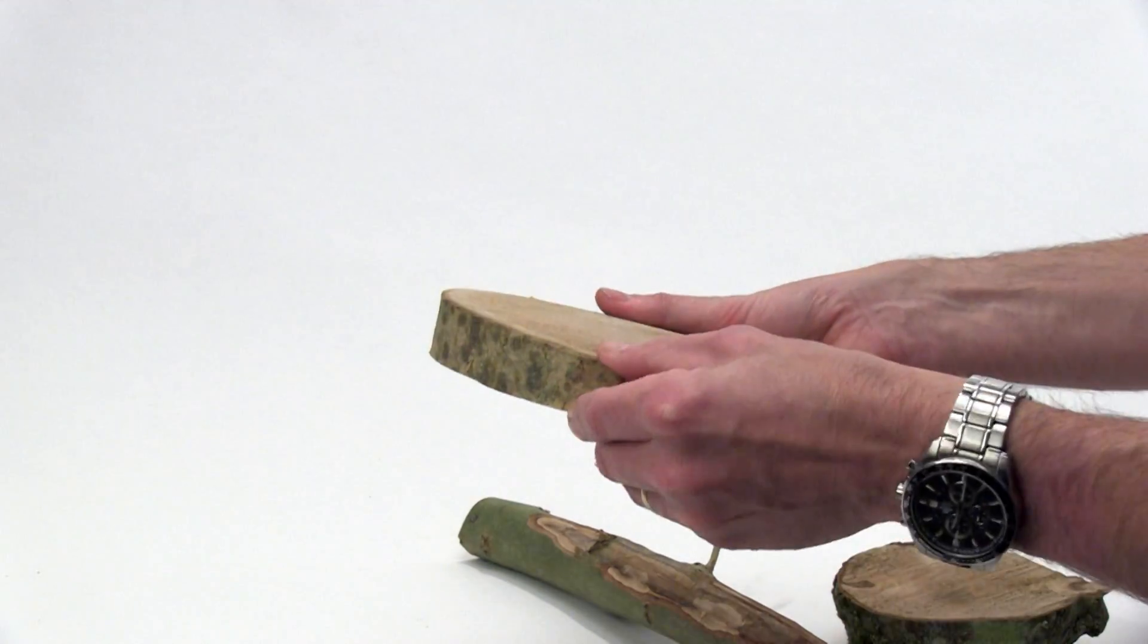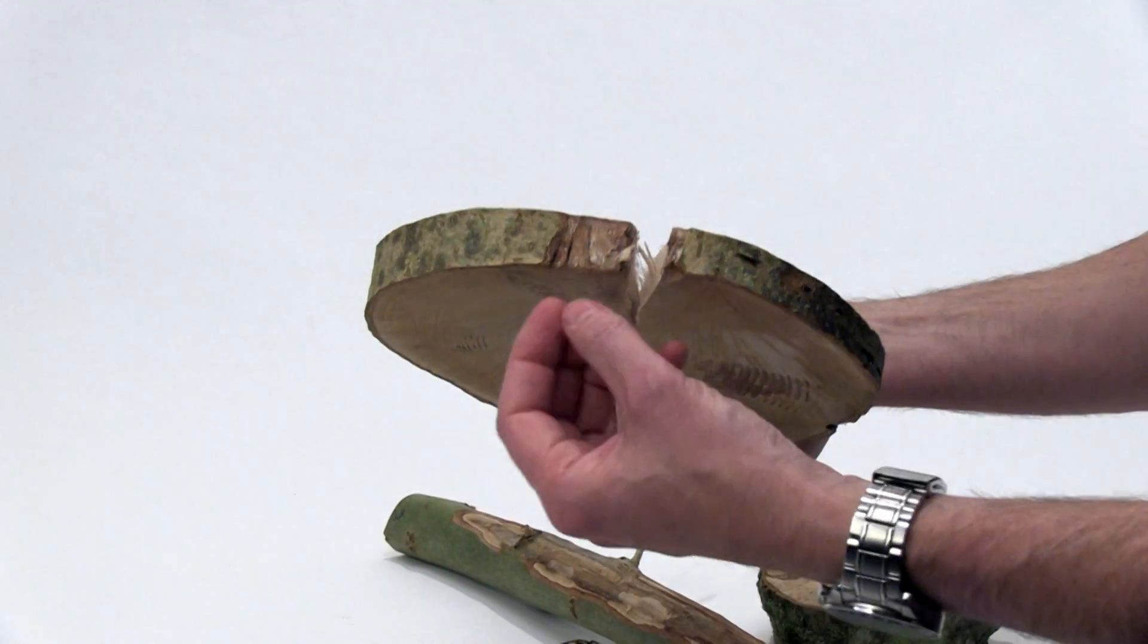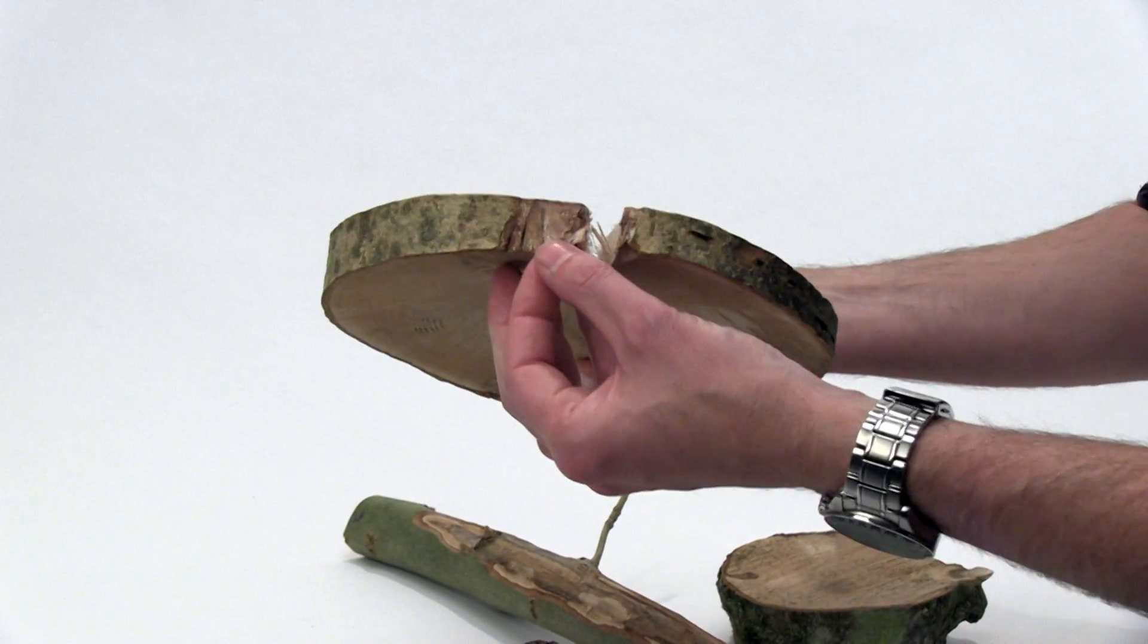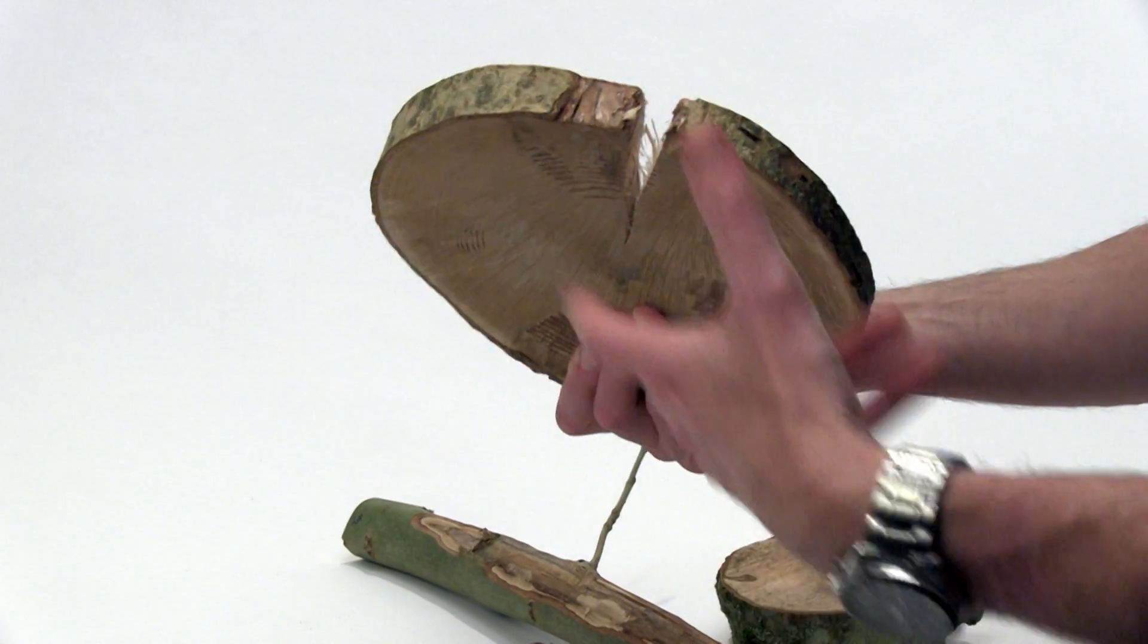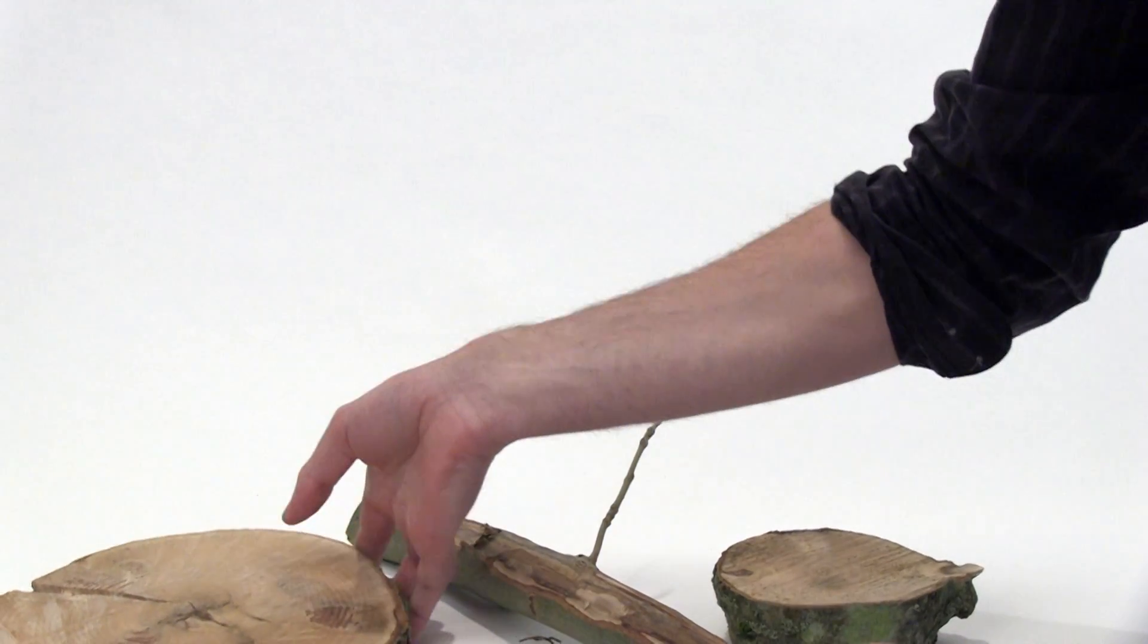If you just scrape away the outer bark of the tree or shrub, particularly at the base, you'll see a white fungal sheet, which is quite typical for honey fungus. And if you give it a bit of a sniff, it actually smells quite mushroomy, which is quite typical for the honey fungus pathogen.